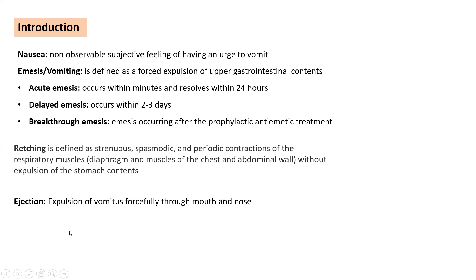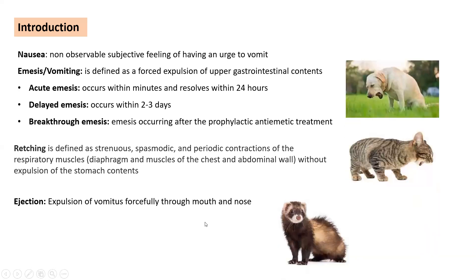Then ejection — ejection is a type of vomiting. It is the expulsion of vomitus forcefully through the mouth and the nose. Several animal models are available by which one can test the anti-emetic activity of drugs. Let's see the first model: anti-emetic activity in the ferret.